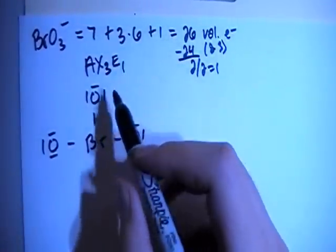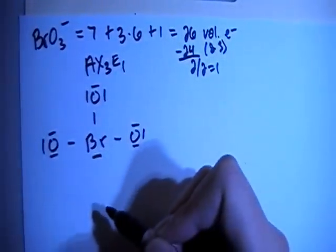And then we also have to add on this lone pair, non-bonding pair on the bromine. So there we go.